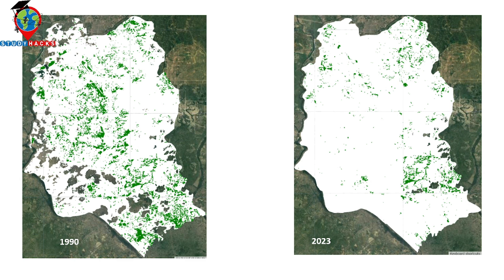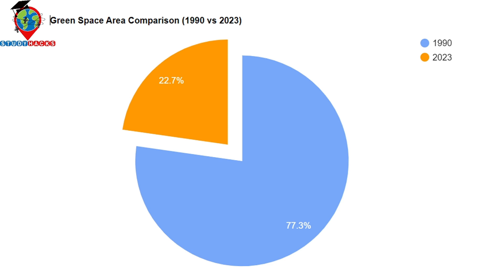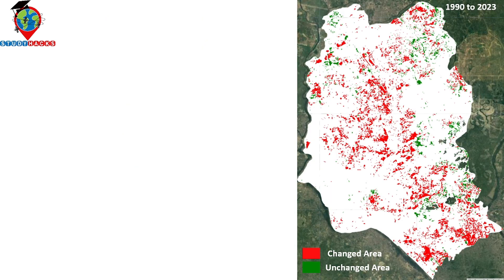I already created two maps — for 1990 and 2023 — for urban green space, and I also compared their area. We find that urban green space in 2023 is 22.7% and in 1990 it was 77.3%. In the change detection map, red color identifies changed areas — where vegetation existed in 1990 but is gone in 2023, indicating vegetation loss. Green color identifies areas with no change between the two time periods.